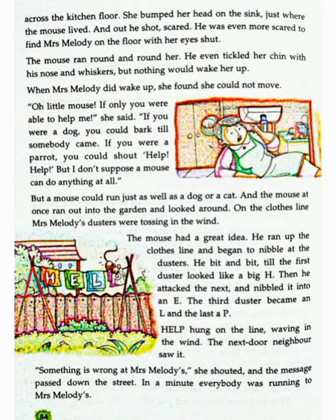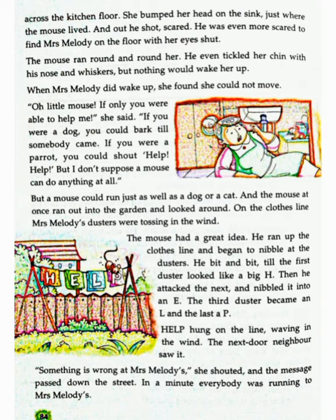But a mouse could run just as well as a dog or a cat. Parantu chuha kewal dod sakta hai jaise ki billi ya kutta dod sakta hai. And the mouse at once ran out into the garden and looked around. Aur tabhi chuha ek dam bagiche ki taraf doda aur usne chaaro aur dekha. On the clothes line, Mrs. Melody's dusters were tossing in the wind. Kapdon ki rassi par Mrs. Melody ke dusters hawa mein jhool rahe the. The mouse had a great idea. Chuhe ko ek bada vichar aaya. He ran up the clothes line and began to nibble at the dusters. Vahe cloth line ke upar doda aur dusters ko kuturna shuru kar diya.